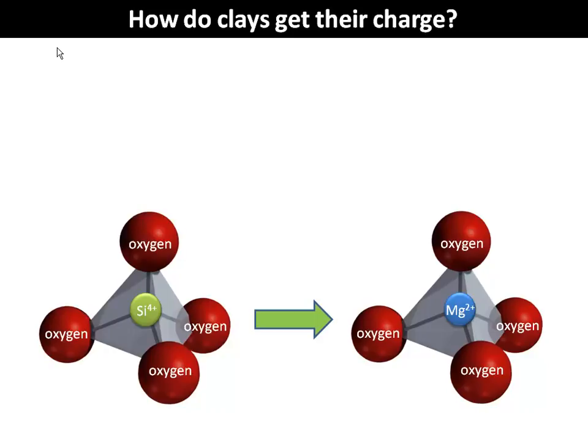All of this happens based on the size of the atom, so this substitution process is not random — only certain things will substitute for other things. Magnesium happens to be one of the elements that is a common substitution in the silicon oxygen tetrahedron. Silicon has a plus-four charge and magnesium only has a plus-two charge, while each one of those oxygens still has a minus-two. So when we substitute with magnesium, we fulfill less of that negative charge and we end up with a net charge difference of minus two, which increases the negative charge associated with our clay mineral.